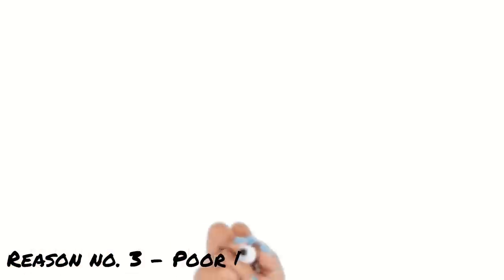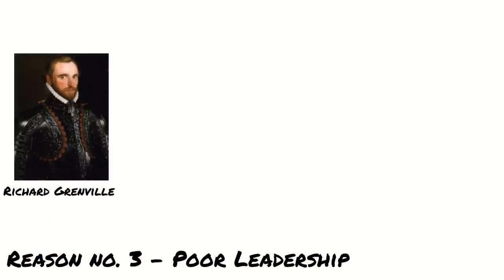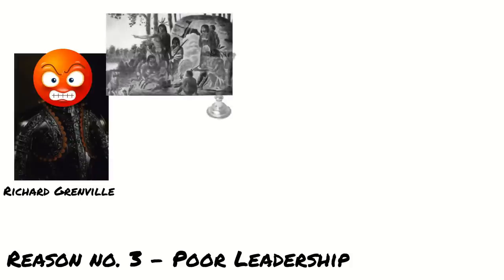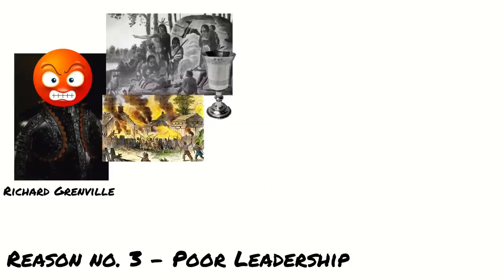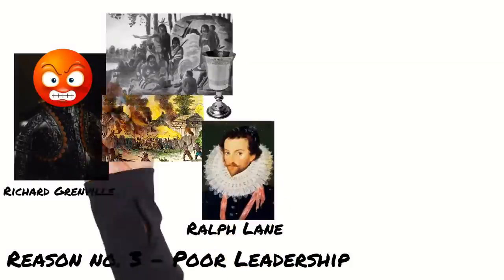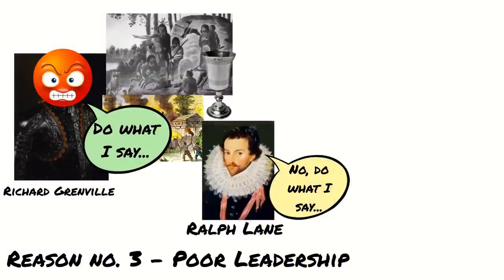Another factor in the failures of the colonies was the poor choice of leaders. The first expedition was led by Sir Richard Grenville, who was a privateer and experienced sailor. However, he was known for his hot temper and the men of the colony found him hard to get on with. He also began to alienate the Algonquin when a silver cup went missing and Grenville blamed the tribe, whom he then sacked and burned. Grenville also did not get on with the governor of the colony, Ralph Lane, and this led to the colonists receiving little or contradictory instructions, which made the establishment of the camp difficult.